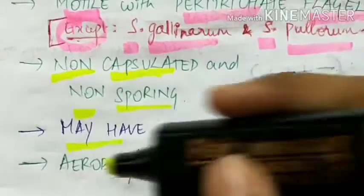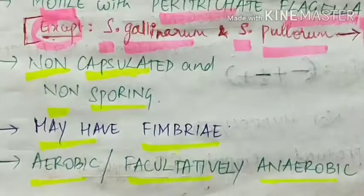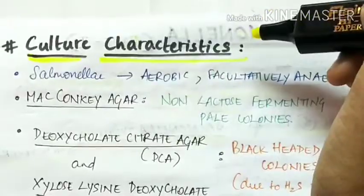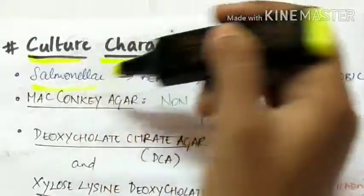The organisms are non-capsulated and non-sporing. They may have fimbriae and they are aerobic or facultatively anaerobic.